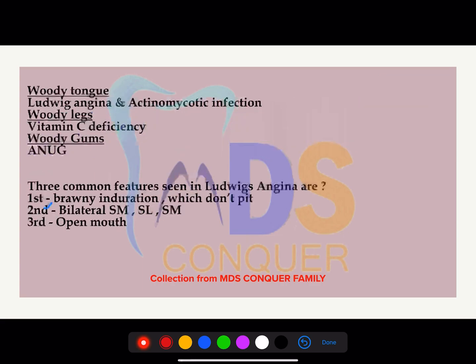Looking at related exam questions, the tongue in Ludwig's angina is called a woody tongue. When you see a description of woody tongue, you can go for Ludwig's angina as a primary option, but woody tongue can also be seen in actinomycosis. Additionally, woody legs are seen in vitamin C deficiency, and woody gums are seen in anarck. To summarize: woody tongue — Ludwig's angina and actinomycosis; woody legs — vitamin C deficiency; woody gums — anarck.